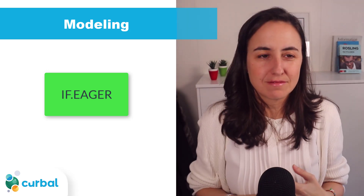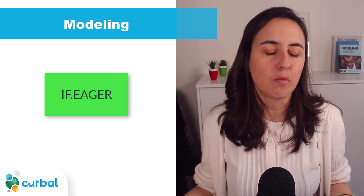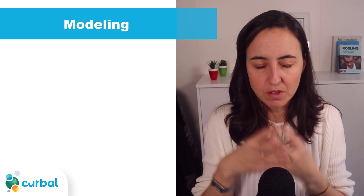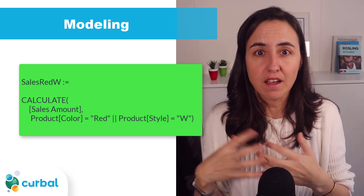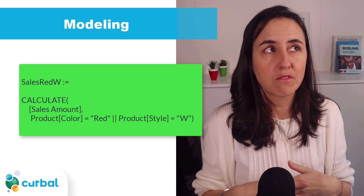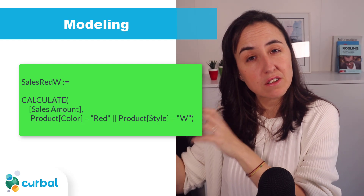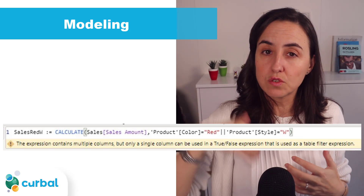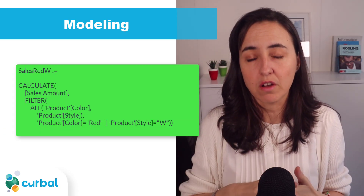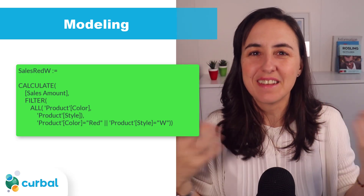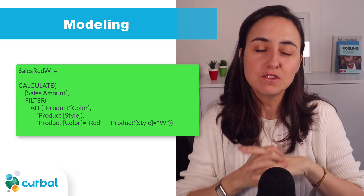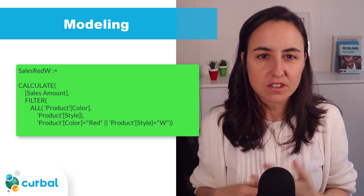Use IFEAGER only when you have a specific scenario — it would be interesting to also compare it with SWITCH in a dedicated DAX video. They've also updated the behavior of CALCULATE, which is great for beginners. Previously if you wrote something like CALCULATE(TotalSales, ProductColor = "Red"), you'd get an error because you needed to explicitly call FILTER. Now it works without that explicit FILTER wrapper, which will make things a lot easier for beginners.